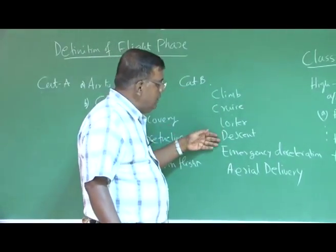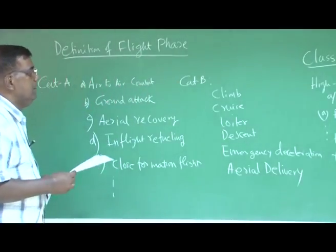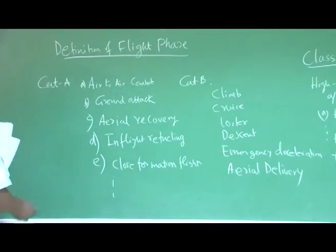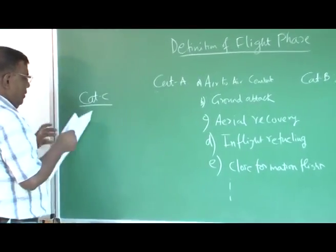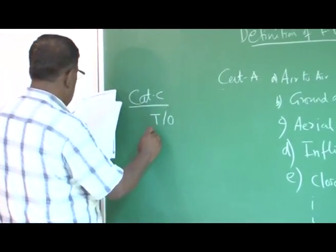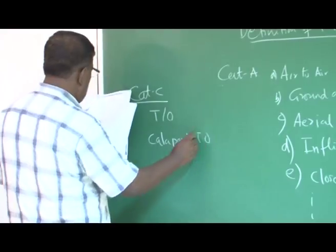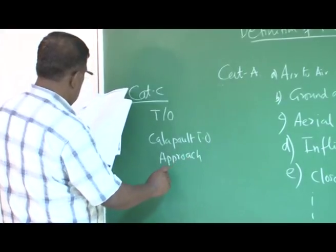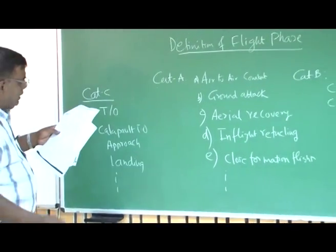In category B, the flight phases are climb, cruise, loiter, descent, emergency, deceleration, and aerial delivery. Similarly, you have category C, which includes takeoff, catapult takeoff, approach, landing, and many more. These are the flight phases that come under category C.